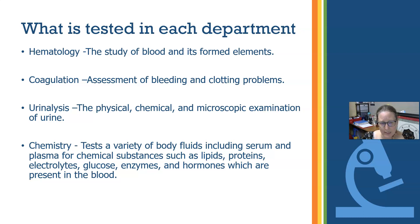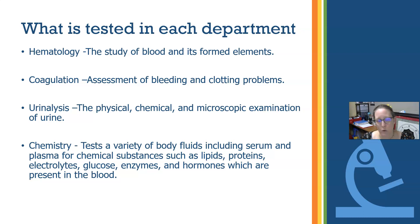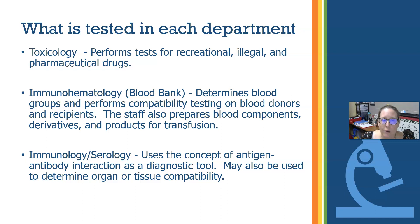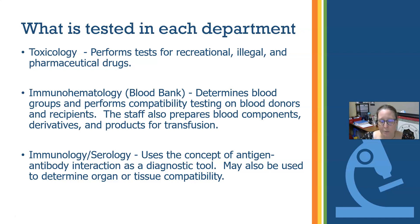Chemistry has lots of tests, and we can test a variety of body fluids — mostly serum and plasma, but also spinal fluid, peritoneal fluids, and others — looking for chemical substances like lipids, proteins, electrolytes, glucose, enzymes, and hormones to see if levels are appropriate. Toxicology can be its own department or folded into clinical chemistry, where you test for recreational drugs, illegal drugs, and pharmaceutical drugs. For example, if someone is on seizure medications and having seizures, we can check the medication level in their blood to see if they're taking too much or not enough.